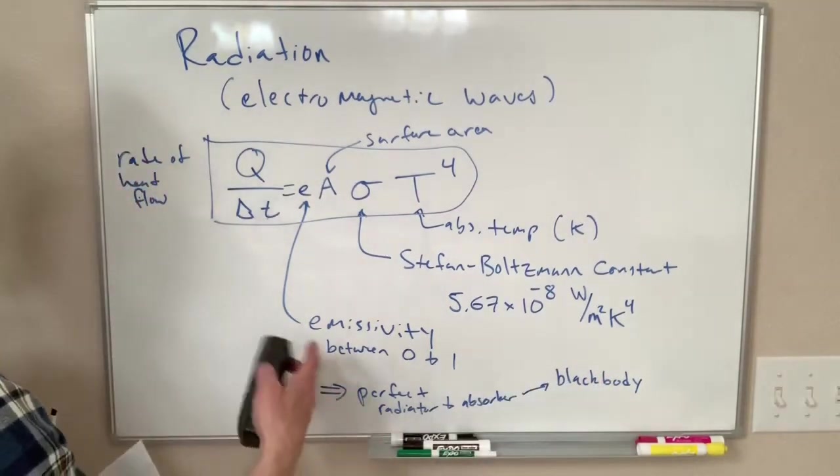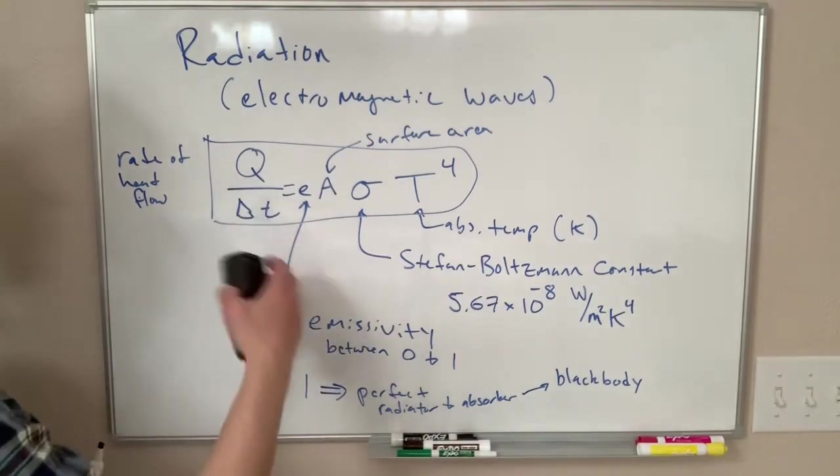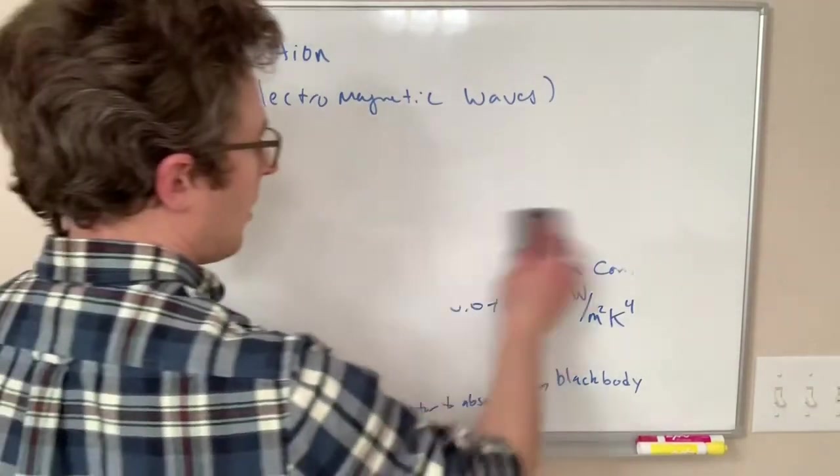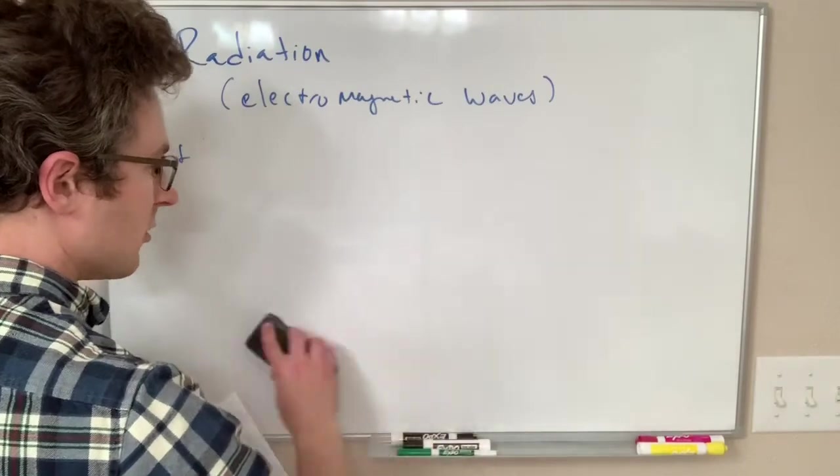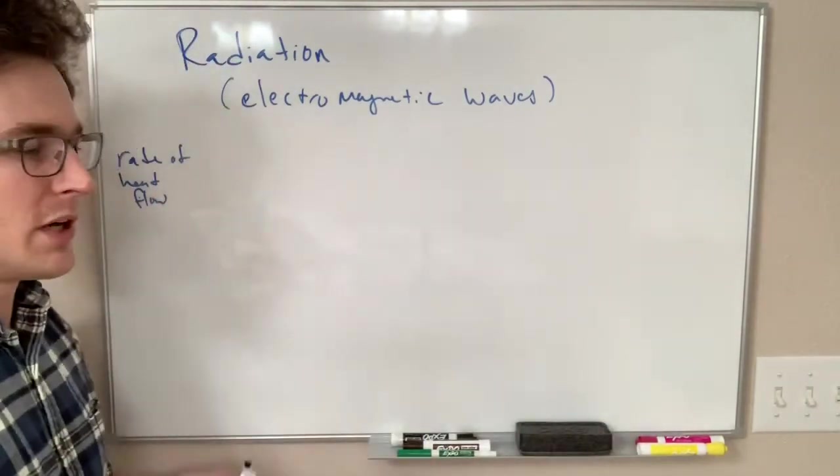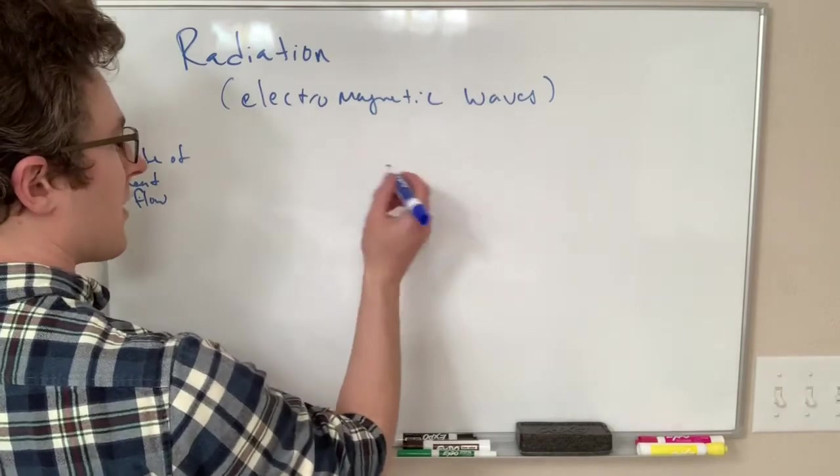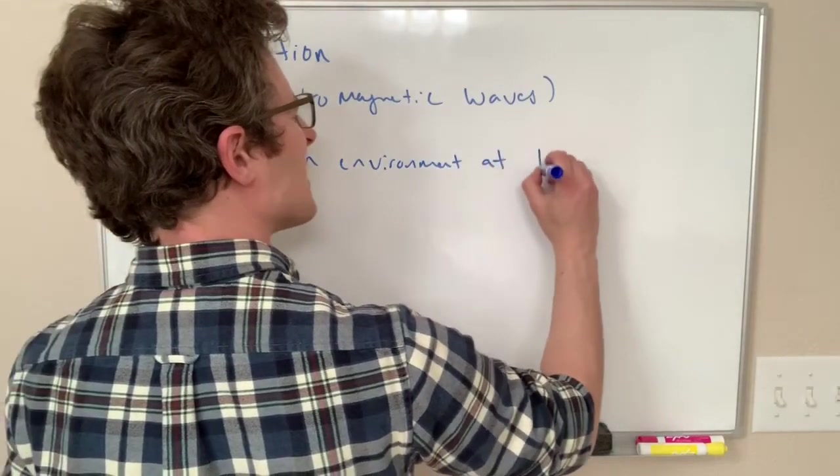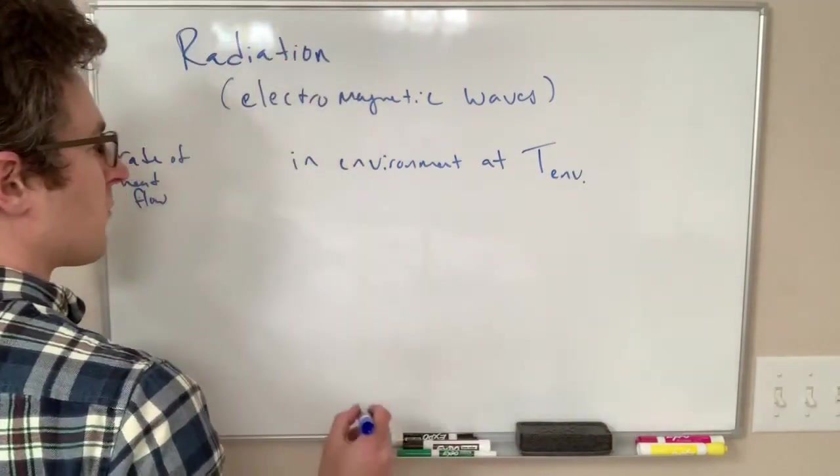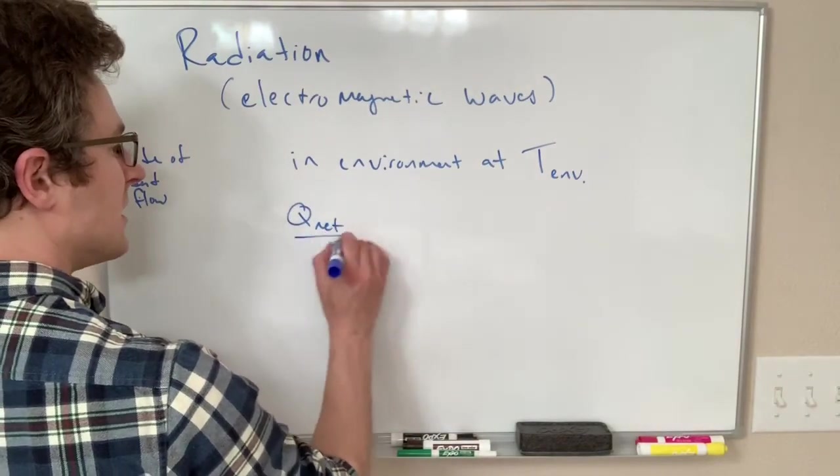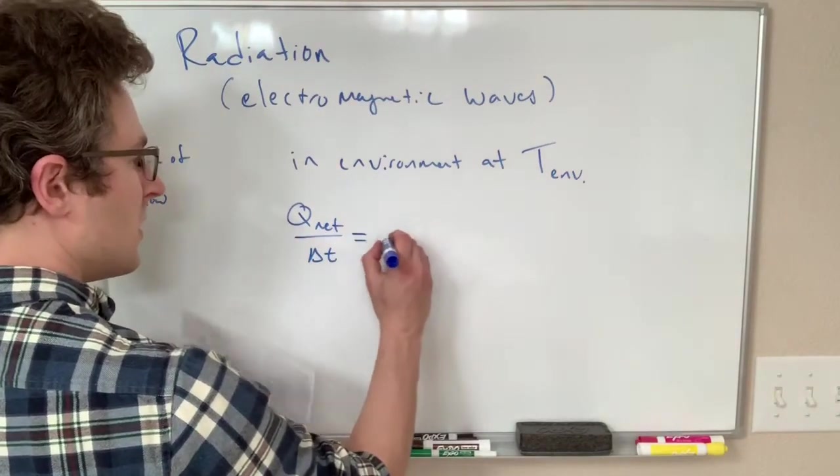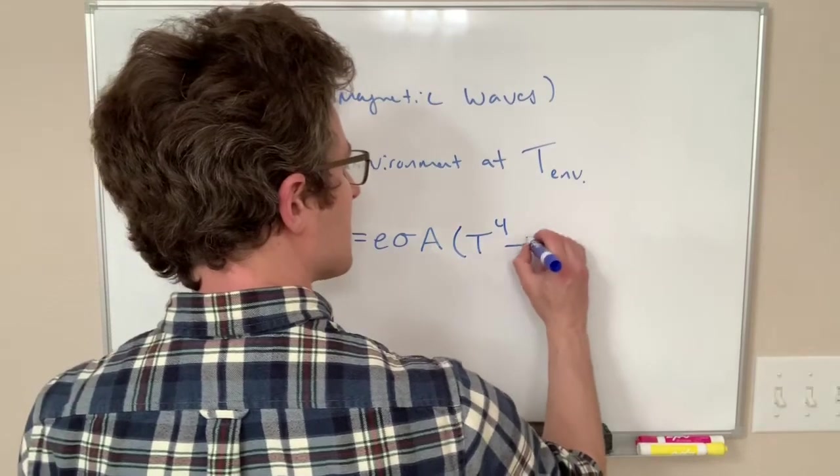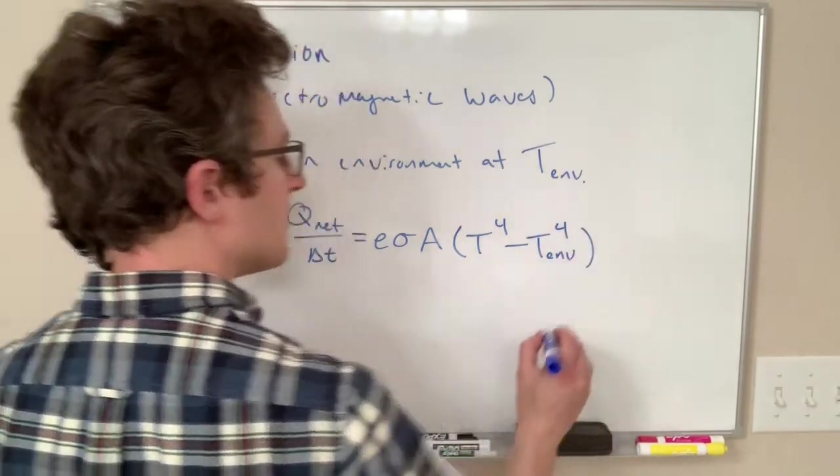All right, so this is the amount of heat flow emitted by an object. It turns out if you have an object that is in an environment, it also feels heat radiation from the environment. So if we're in an environment at T environment, then we have something that looks like this: the net heat flow, Q net over delta T, is equal to E sigma A T to the fourth minus T of the environment to the fourth.